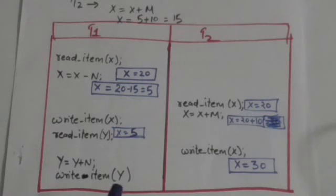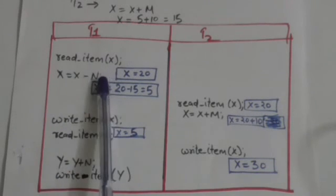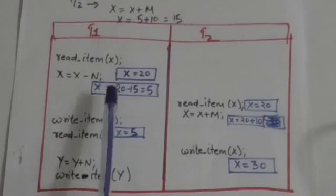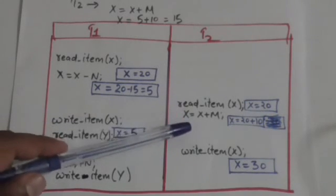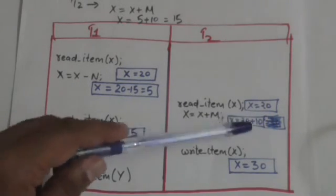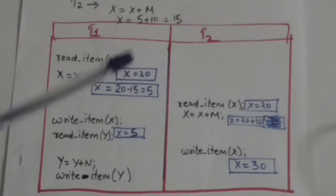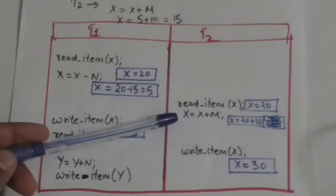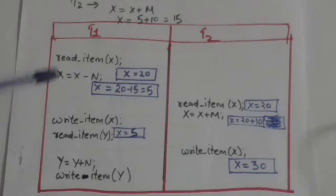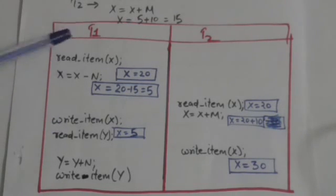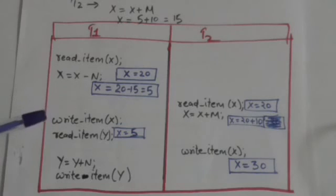Next, T2 reads x — but T2 reads the old value of x, which is 20, not the new value of 5, because T1 has not written the new value to the database yet. T2 then adds m (10) to x, so the value of x that T2 holds becomes 30.